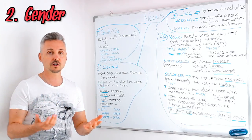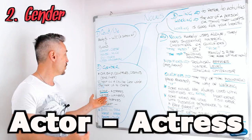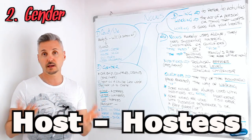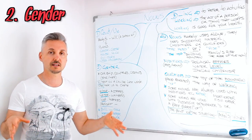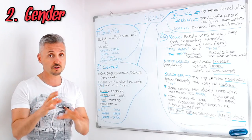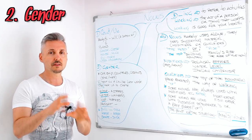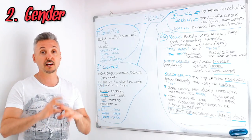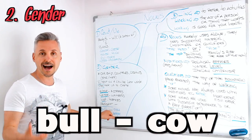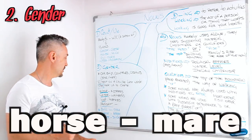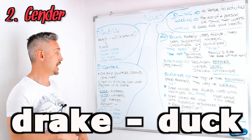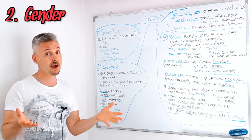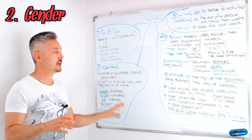There are also professions like actor and actress, waiter and waitress, host and hostess. Or, for example, 'president' stays the same. You need to learn which gender to use, because sometimes they have a feminine equivalent. For animals, we have another word — for example: bull/cow, horse/mare, drake/duck. Remember that nouns usually don't have gender, but sometimes they can.